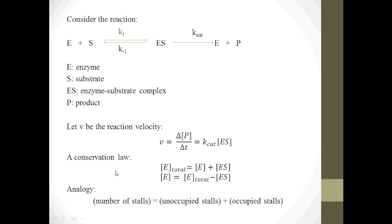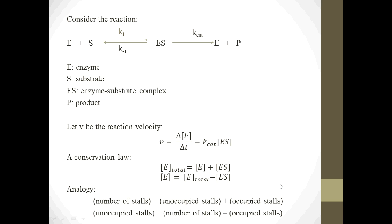An analogy for this: say you walk into a bathroom with a certain number of stalls. The total number of stalls equals the unoccupied stalls plus the occupied stalls. The amount of unoccupied stalls equals total stalls minus occupied stalls. For example, if you've got 10 stalls and 4 are occupied, the remaining 6 must be unoccupied. The unoccupied stalls are like E, my free enzyme. And if all 10 stalls are filled — saturated — then unoccupied stalls equals 10 minus 10, which is zero.